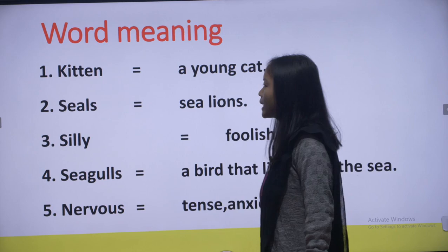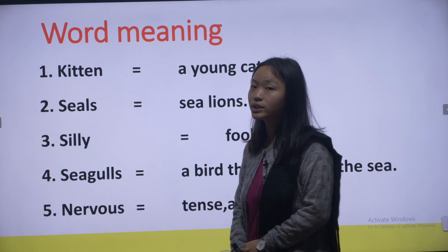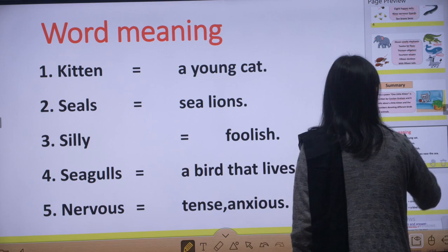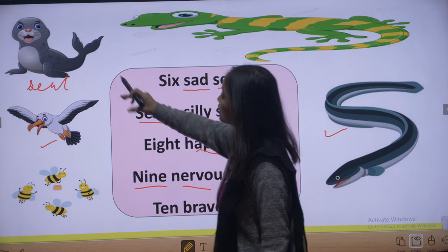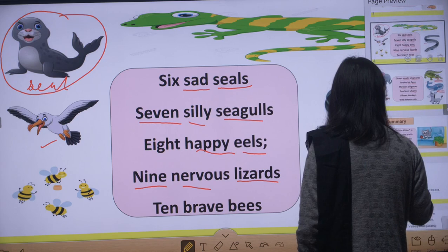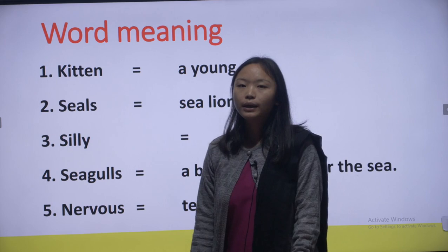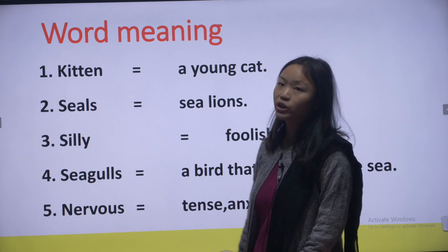Next, seals — S-E-A-L-S. What is a seal? It is a sea lion. I have shown you the picture of the seal. You have to remember which animal it is — remember both the name and the picture. Next, silly — S-I-L-L-Y. Silly means foolish.